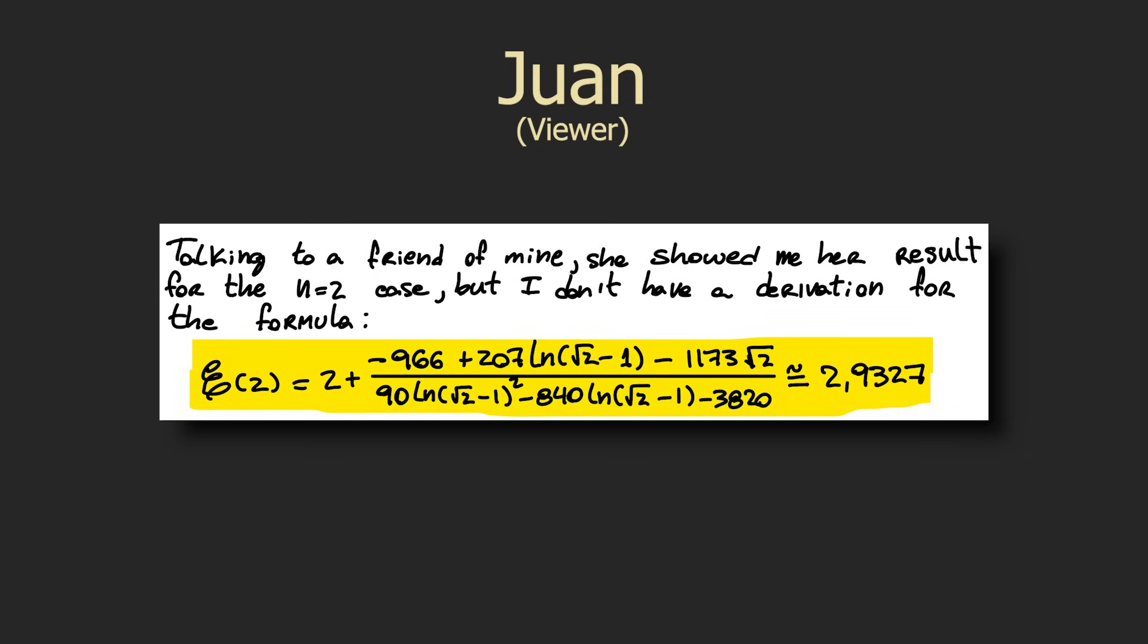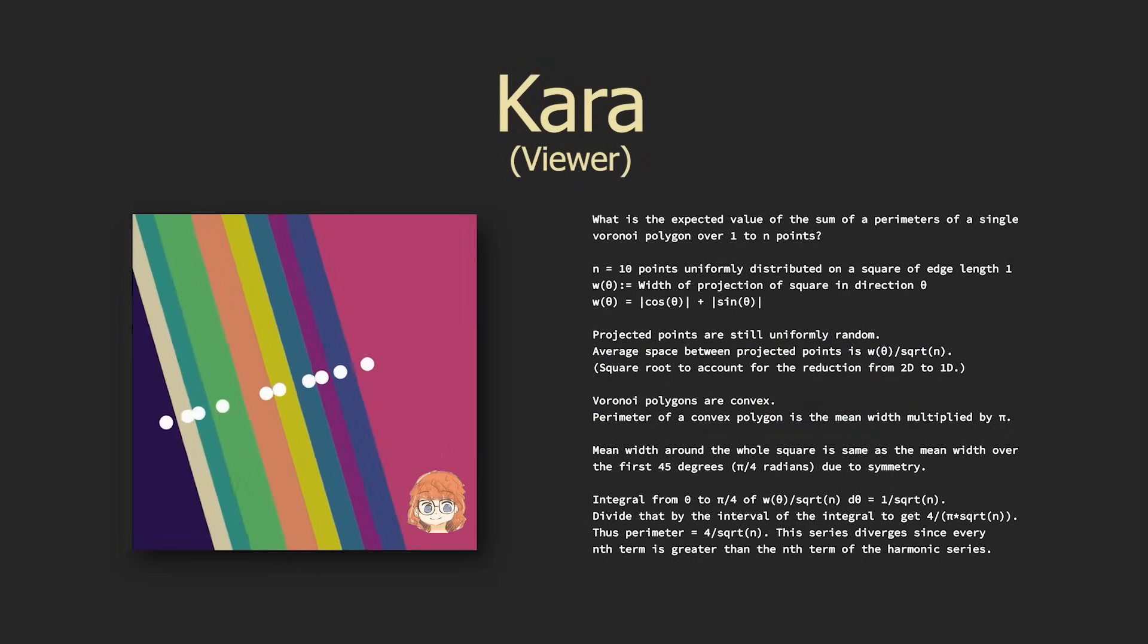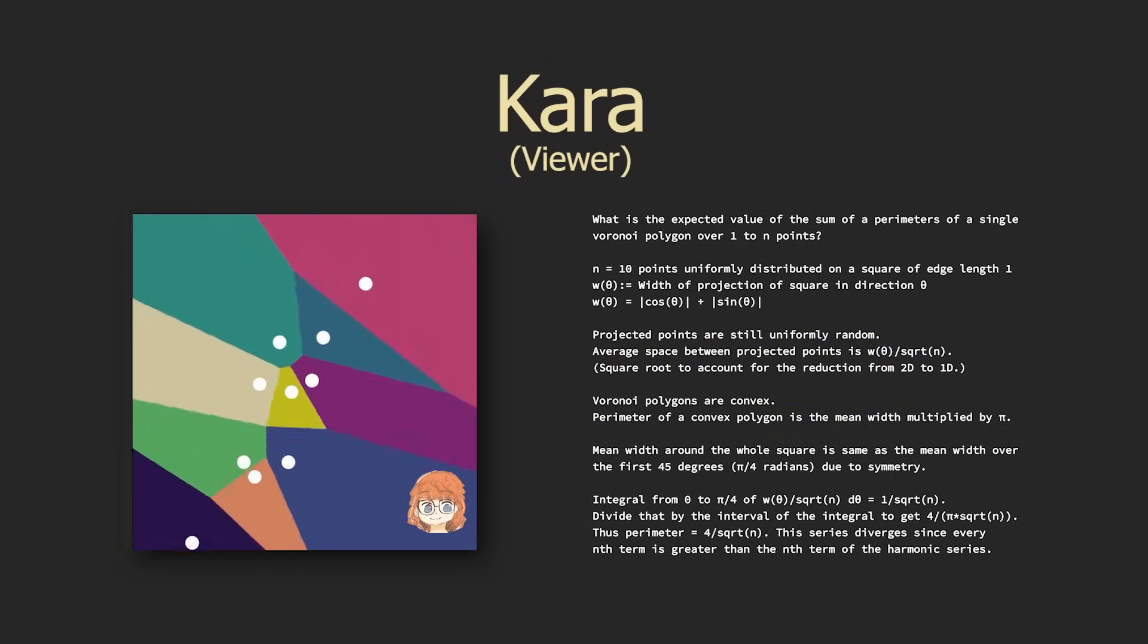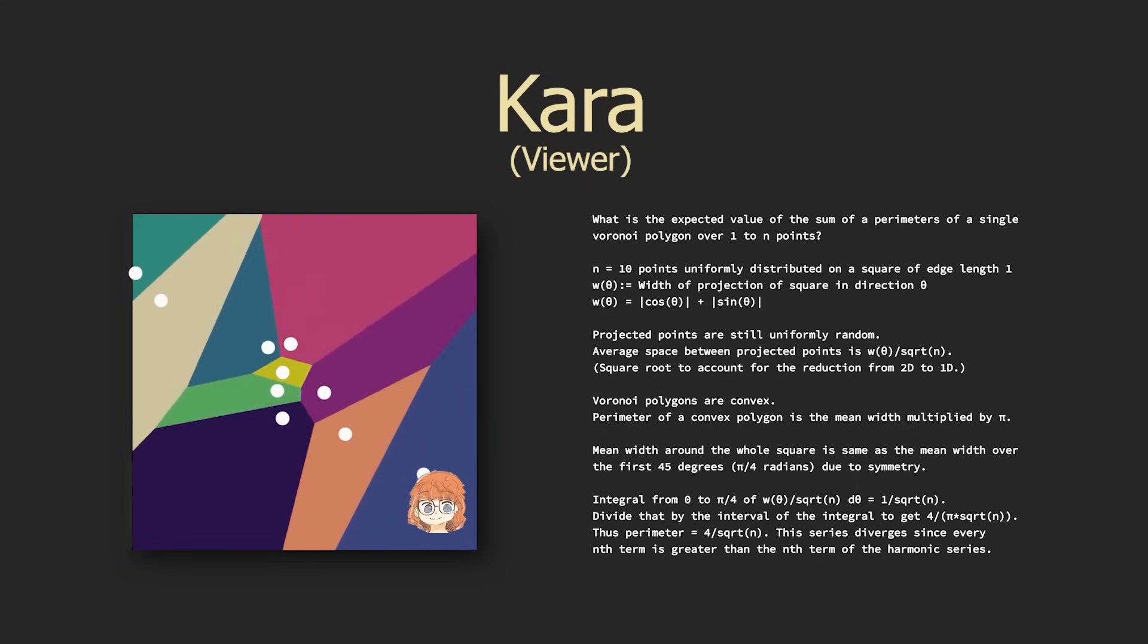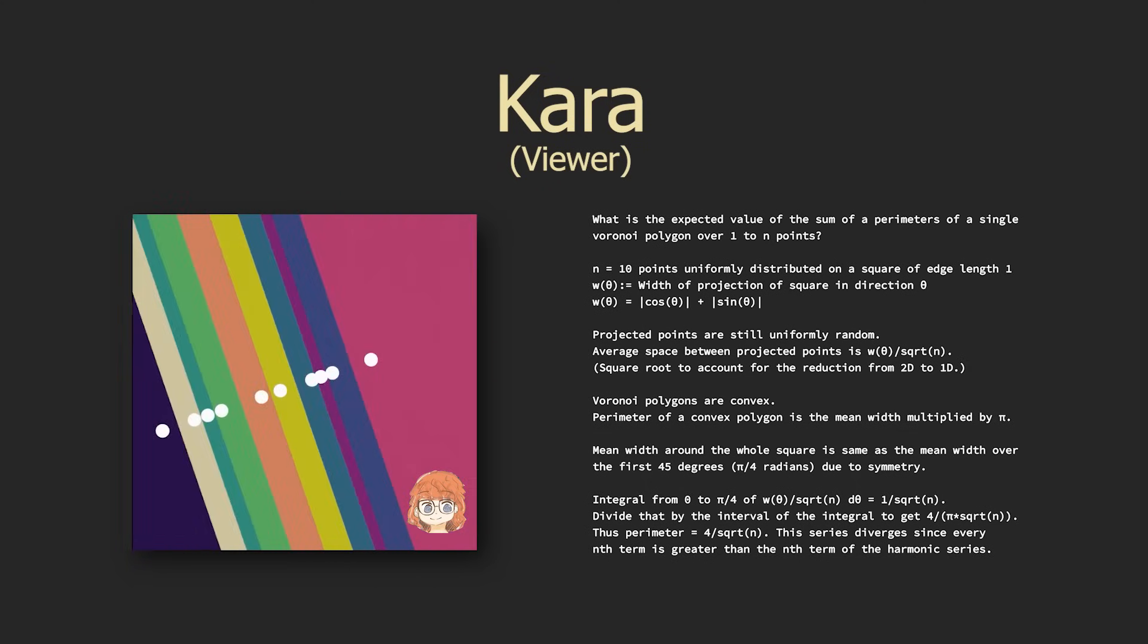Now on that note, there was one more viewer submission, which if I'm understanding correctly, claims to have an argument that proves 4 over square root of n is the correct answer. It uses a few interesting mathematical techniques, including this thing called Crofton's formula, which is about finding the lengths of curves by projecting them onto lines.